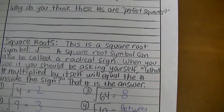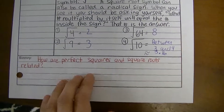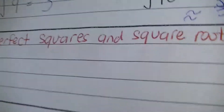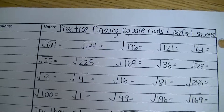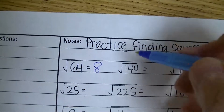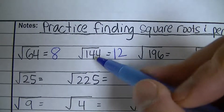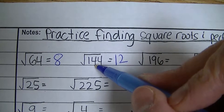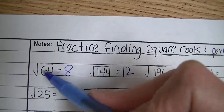For the summary, answer this question: how are perfect squares and square roots related? You will not receive points on the notes without it. Then flip to the back to work on practice problems. The square root of 64 is 8. The square root of 144 is 12, because 12 times 12 equals 144. The square root of 196 is 14, because 14 times 14 is 196. The square root of 121 is 11, because 11 times 11 is 121.